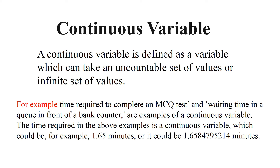The time in the above examples could be, for example, 1.65 minutes or 1.65847 minutes. In simple terms, a continuous variable does not always have to be a whole number — it can be expressed in decimal points and can be continuous within any two time intervals.